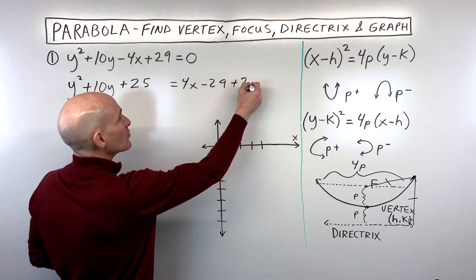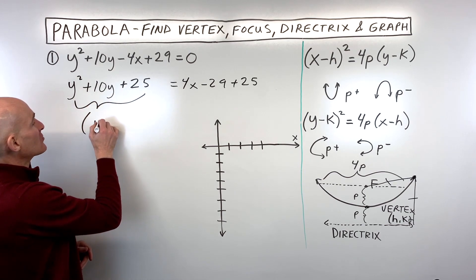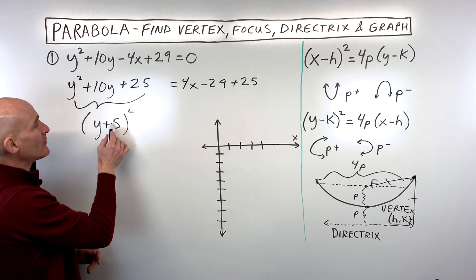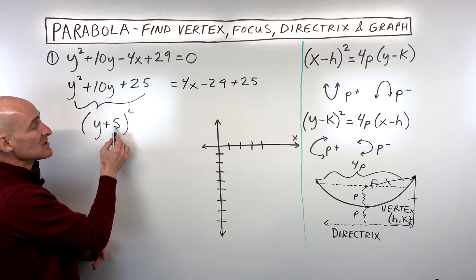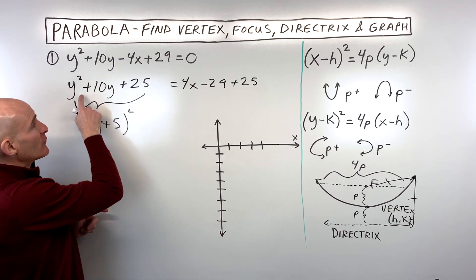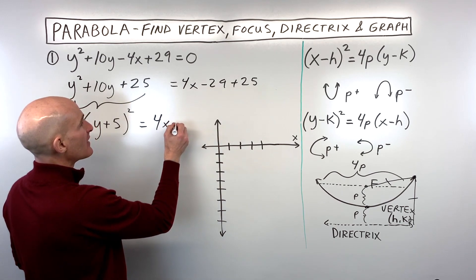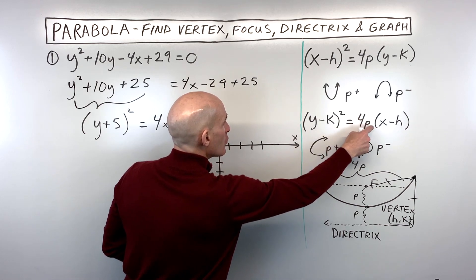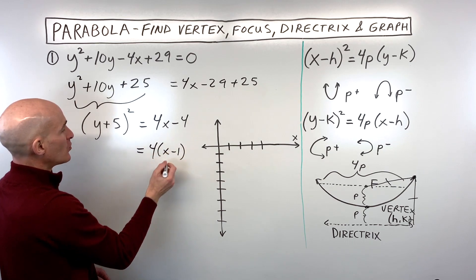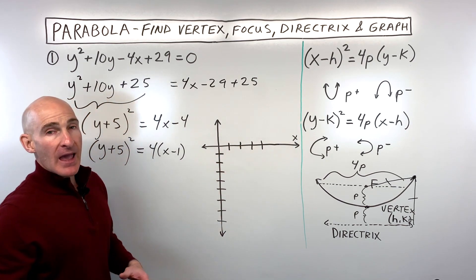We add 25 to the left side, and add it to the right to keep it balanced. Now factor the left side — it's a perfect square binomial: y plus 5, quantity squared. It will always be half of the b value; if this were minus 10y, you'd get y minus 5. On the right side, simplifying gives 4x, and negative 29 plus 25 is negative 4. Factor out the 4, leaving x minus 1. So we have (y + 5)² = 4(x − 1). Now we can identify the vertex.